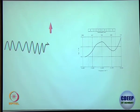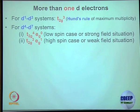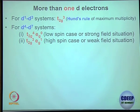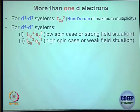This is where crystal field theory becomes superior compared to valence bond theory. In VBT, what you had was d2sp3 or sp3d2 hybridization — you cannot explain where the color comes from. For d1 to d3 configurations, Hund's rule is followed straightforwardly. After d3, for 4 electrons, you have a dilemma: either T2g⁴ Eg⁰ (pairing in T2g) or T2g³ Eg¹ (sending one electron to Eg).